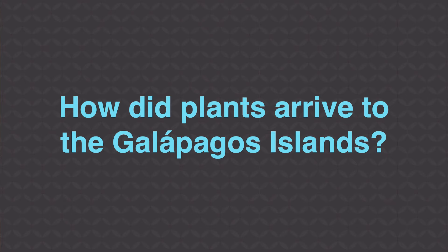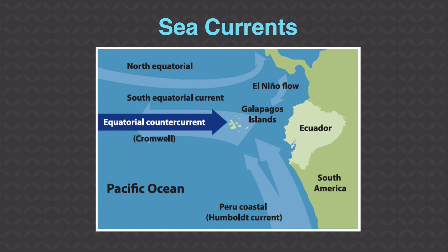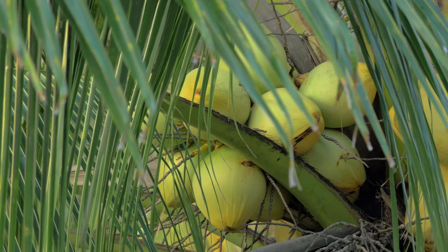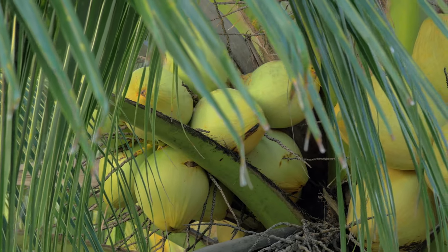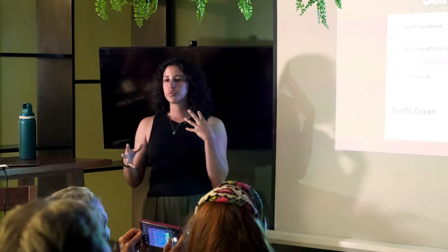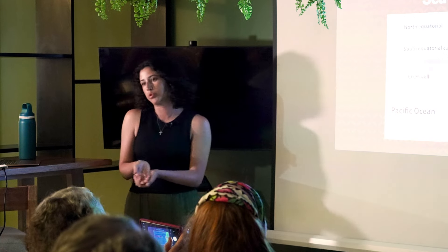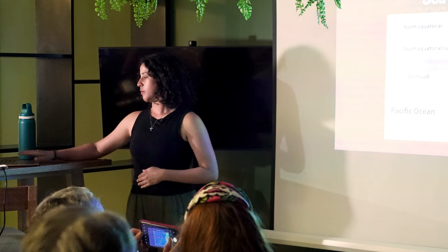If the islands were post-flood formations, how did plants arrive to the Galapagos Islands? Very similar to the global flood, seeds could have arrived in the sea currents. There is a unique combination of both hot and cold currents that could have brought plant seeds to the Galapagos Islands floating in the water. A coconut palm, for example, is very hardy and resistant to a lot of water, and previous studies show seeds are capable of sustaining salt water survival.